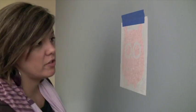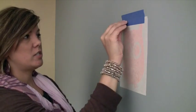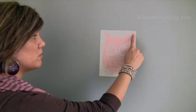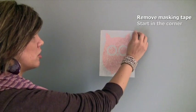And next, after you have the decal all burnished, I like to remove the hinge first. Now we have the decal burnished, and we need to remove the masking tape. So we're going to start in a corner.